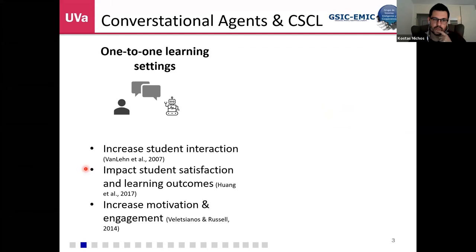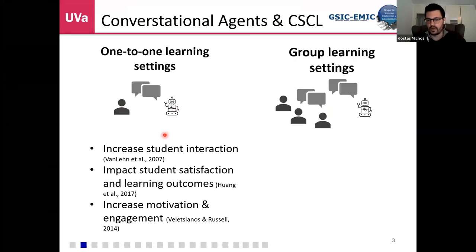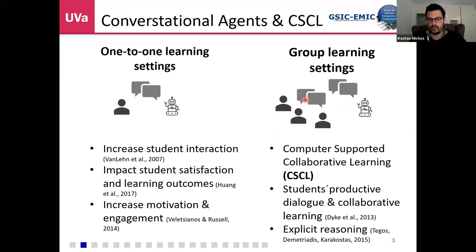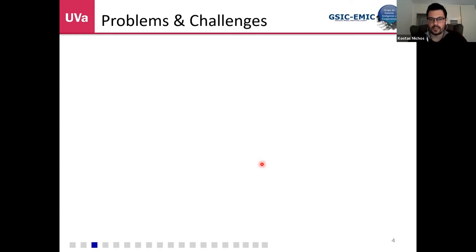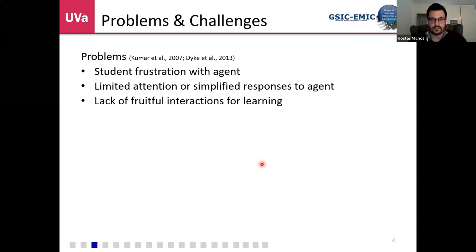Research on one-to-one learning settings — one student interacting with an agent — has shown some benefits, but a relatively lower number of studies have been conducted in group settings, such as multiple students discussing with an agent intervening or multiple agents involved. In computer-supported collaborative learning, this has shown benefits such as productive student dialogue by promoting explicit reasoning. However, literature shows some problems: students might be frustrated with the agent, may not want to talk to it, or prefer to talk to their partner. Students sometimes give simplified responses to agents or pay limited attention, creating difficult conditions for fruitful learning interactions.